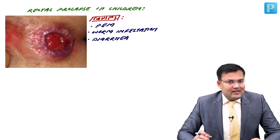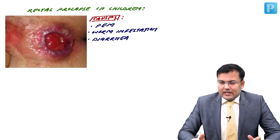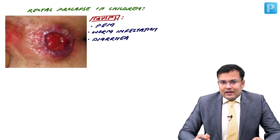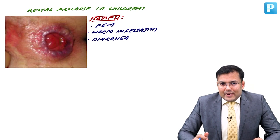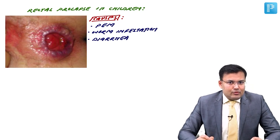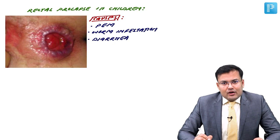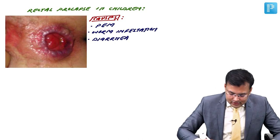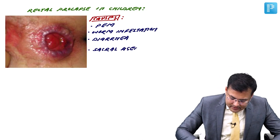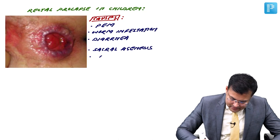Certain patients have sacral agenesis, so there is no support to the rectum. Certain patients have myelomeningocele. In these cases also there is rectal prolapse, but these are rare causes. Other causes are sacral agenesis and meningomyelocele.